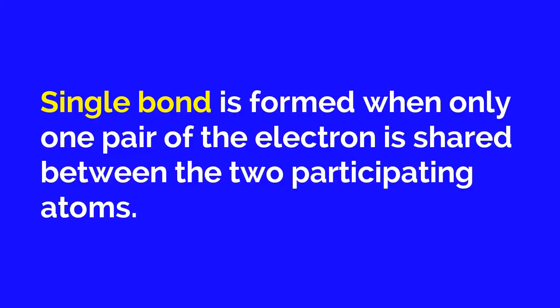Now let us define single, double, and triple covalent bonds. A single bond is formed when only one pair of electrons is shared between the two participating atoms. It is represented by one dash. Although this form of covalent bond has a smaller density and is weaker than a double and triple bond, it is the most stable.